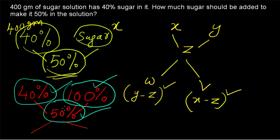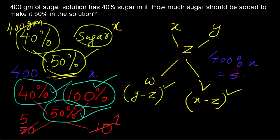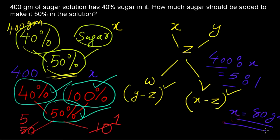The difference between 50 and 100 is 50, and the difference between 50 and 40 is 10, giving a proportion of 50:10, which simplifies to 5:1. We know the 40% sugar solution is 400 grams, and we let the sugar to be added be x grams. So 400:x = 5:1, giving x = 80 grams. Therefore, 80 grams of sugar must be added to the 400 grams of 40% sugar solution to obtain a 50% sugar solution.